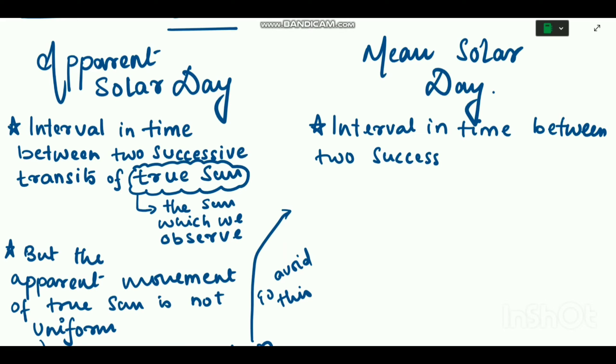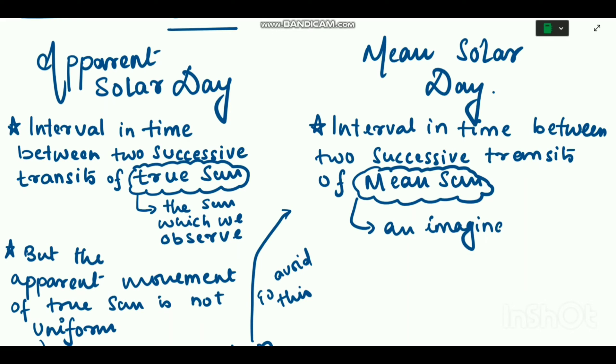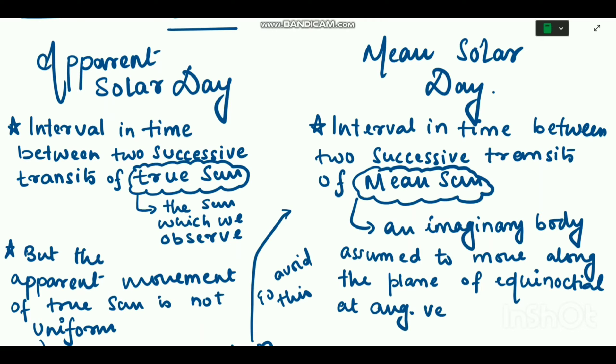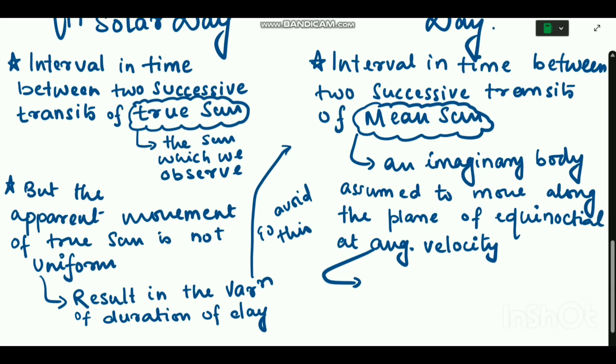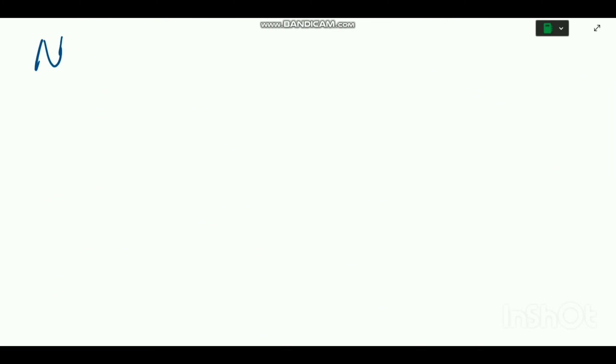So now let's see what is mean solar day. The interval in time between two successive transits of the mean Sun over the same meridian. But again, what is mean Sun? Mean Sun is an imaginary body which is assumed to move along the plane of the equinoctial at the average velocity of the true Sun over a year to maintain uniformity of time.